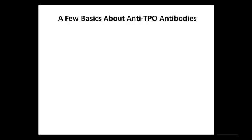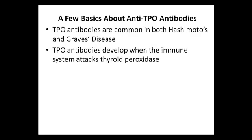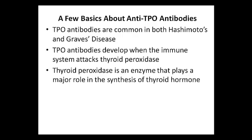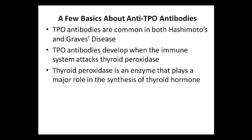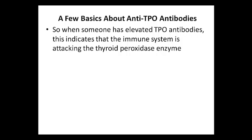Let's discuss a few basics about TPO antibodies. Although TPO antibodies are more commonly associated with Hashimoto's thyroiditis, they are common in both Hashimoto's and Graves' disease. These antibodies develop when the immune system attacks thyroid peroxidase, which is an enzyme that plays a major role in the synthesis of thyroid hormone. The thyroid peroxidase enzyme converts iodide to iodine, and the iodine combines with tyrosine on thyroglobulin, which forms T4 and T3. When someone has elevated TPO antibodies, this indicates that the immune system is attacking the thyroid peroxidase enzyme, which can inhibit the production of thyroid hormone and over time can lead to hypothyroidism.